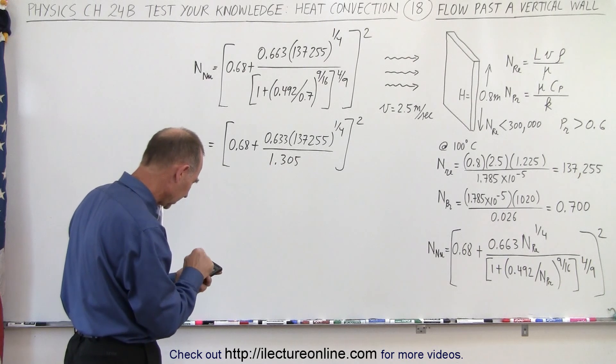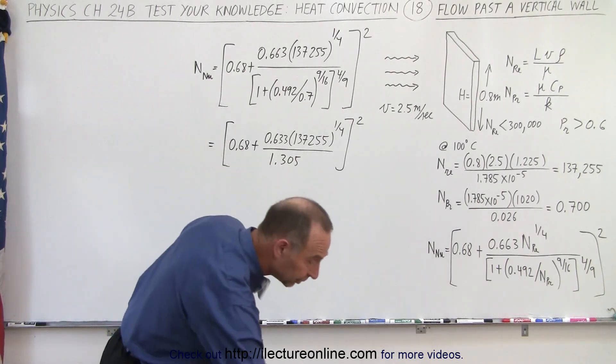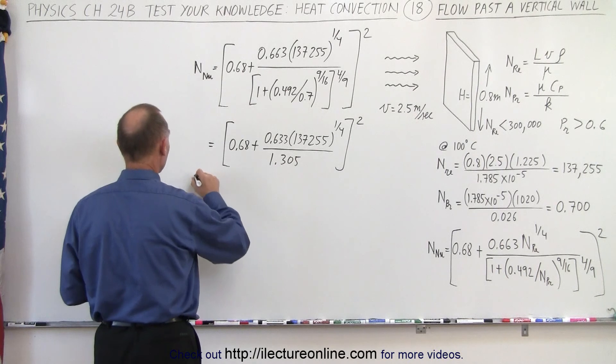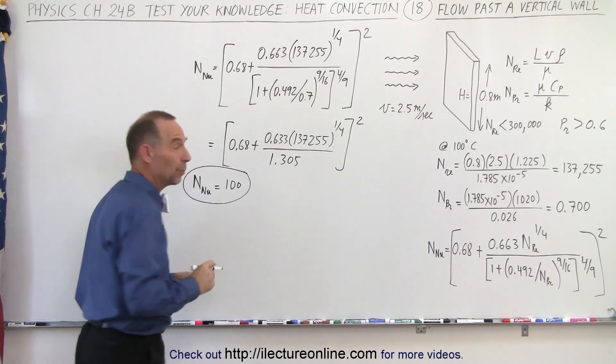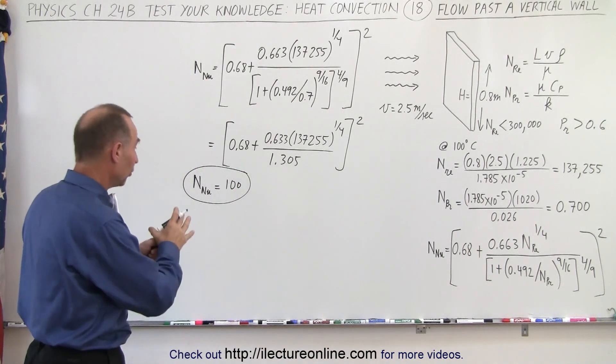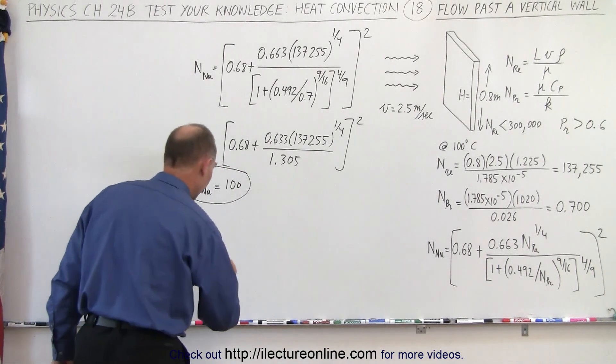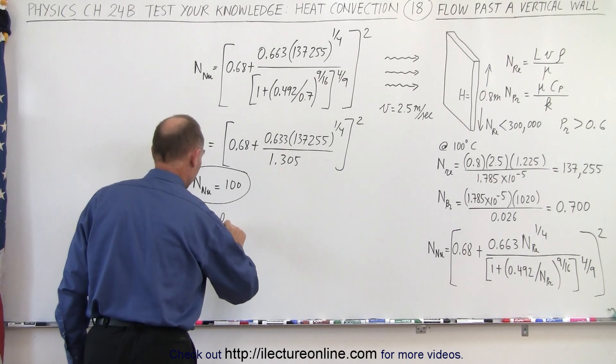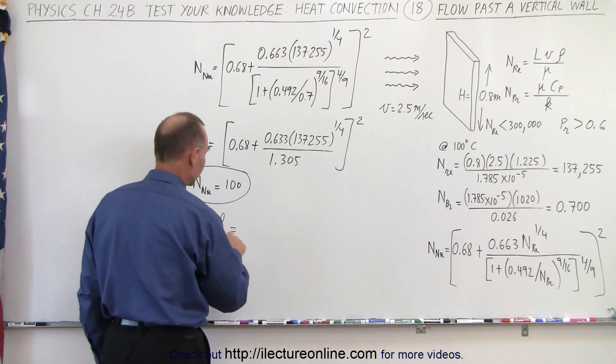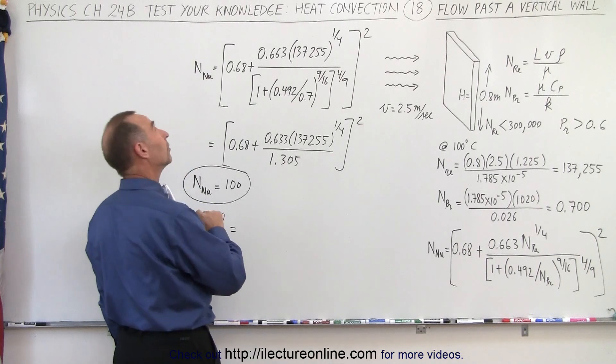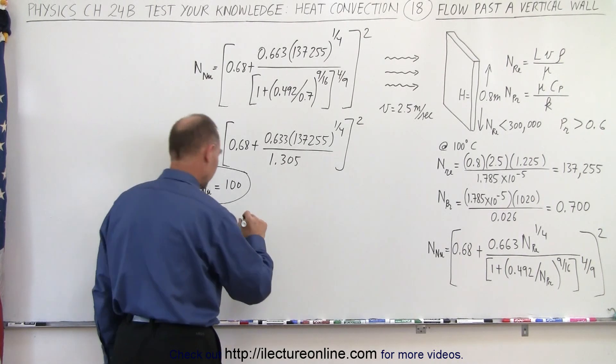Then we square that, which gives me about 100, so it gives us a Nusselt number equal to about 100. Now when we insert that into our transmission coefficient, h is equal to k times the Nusselt number divided by the characteristic length.